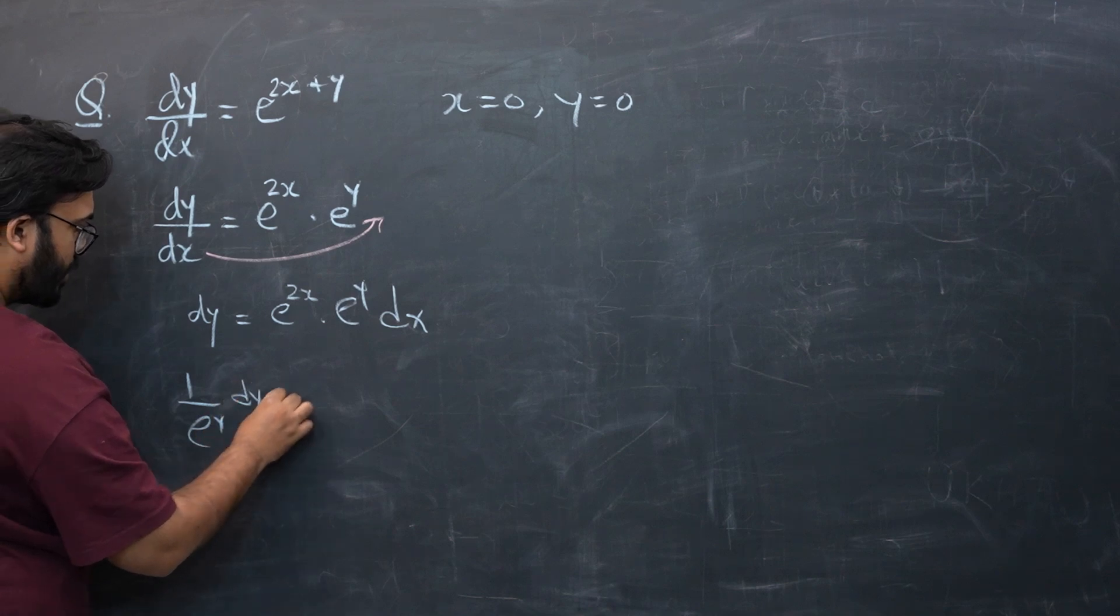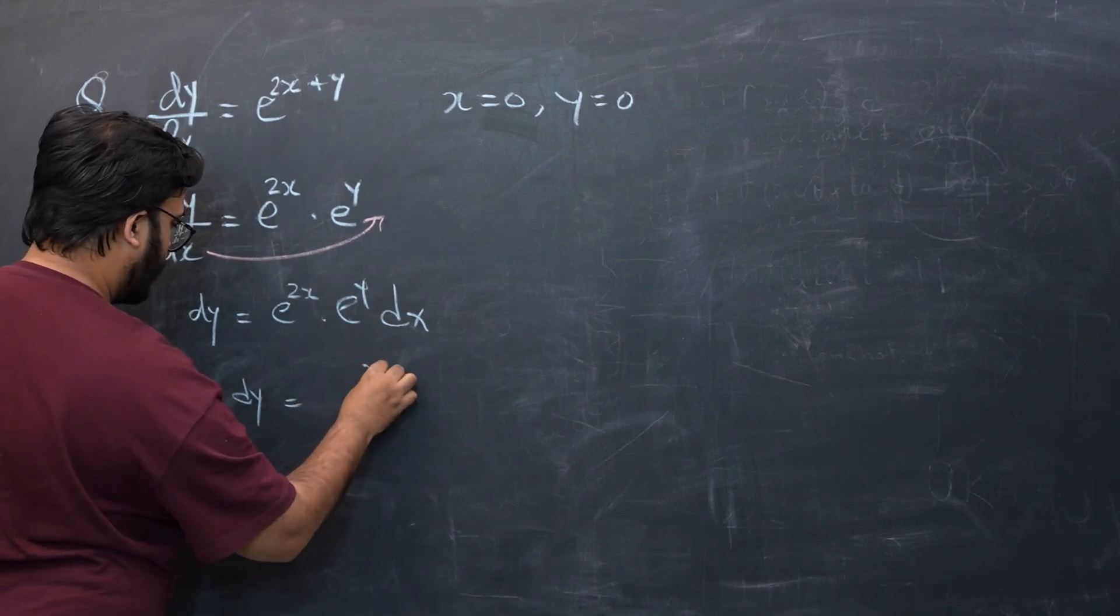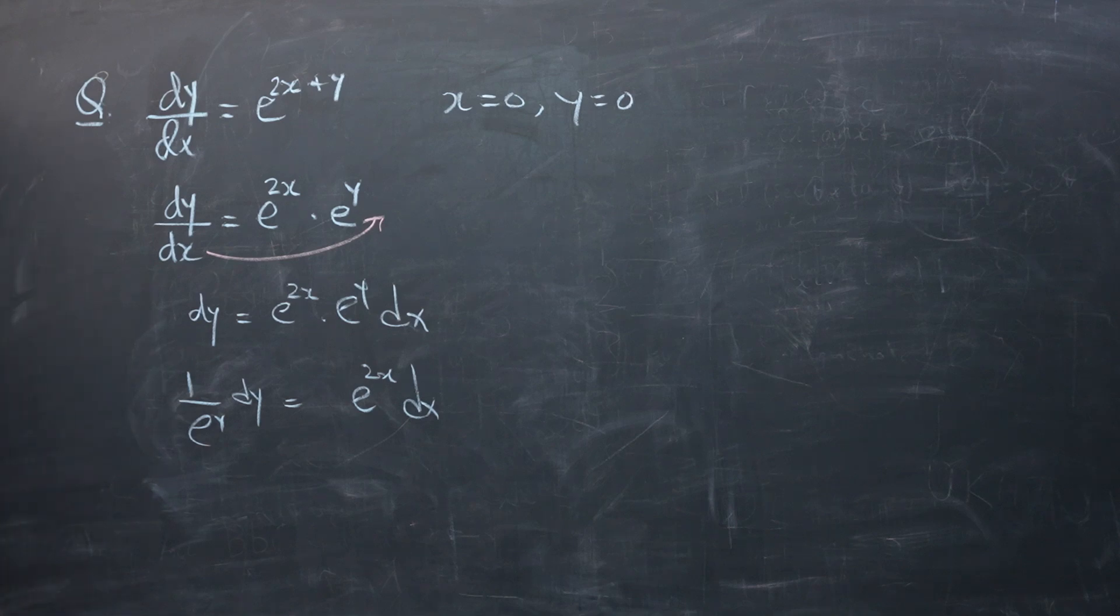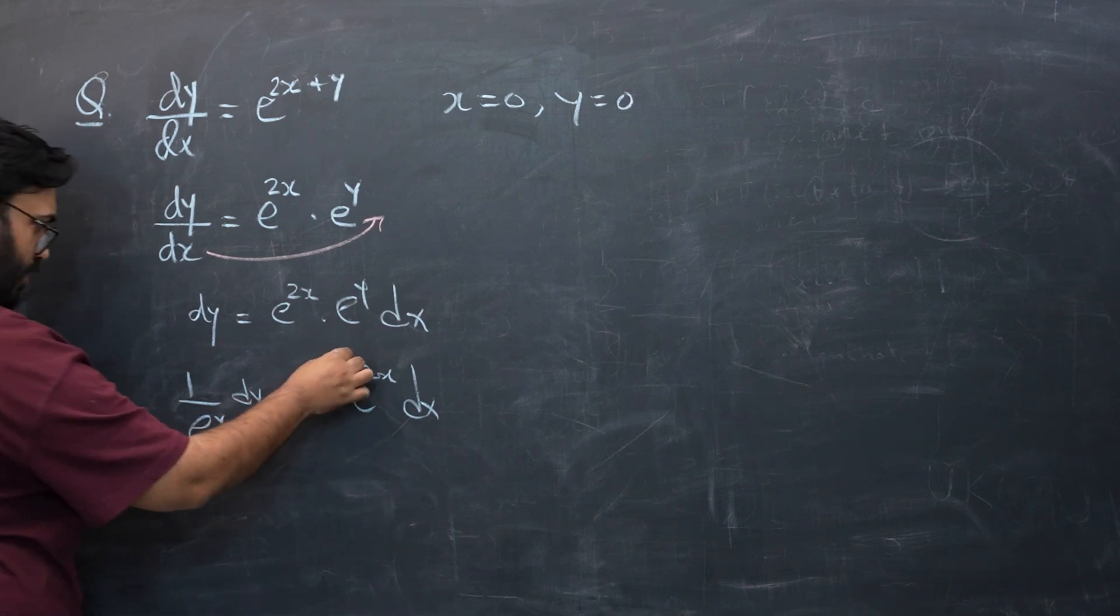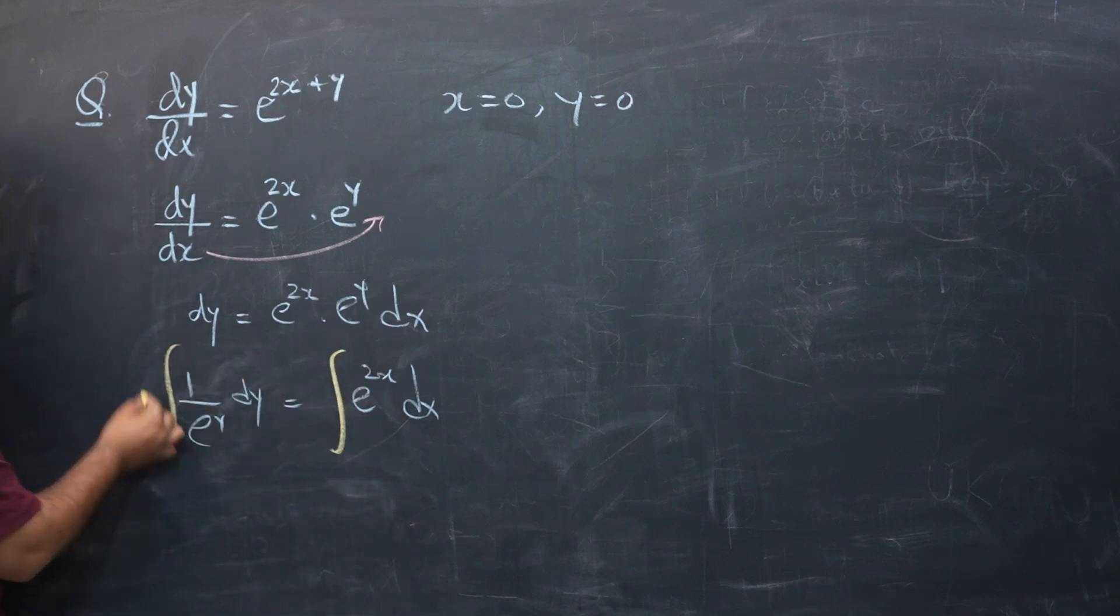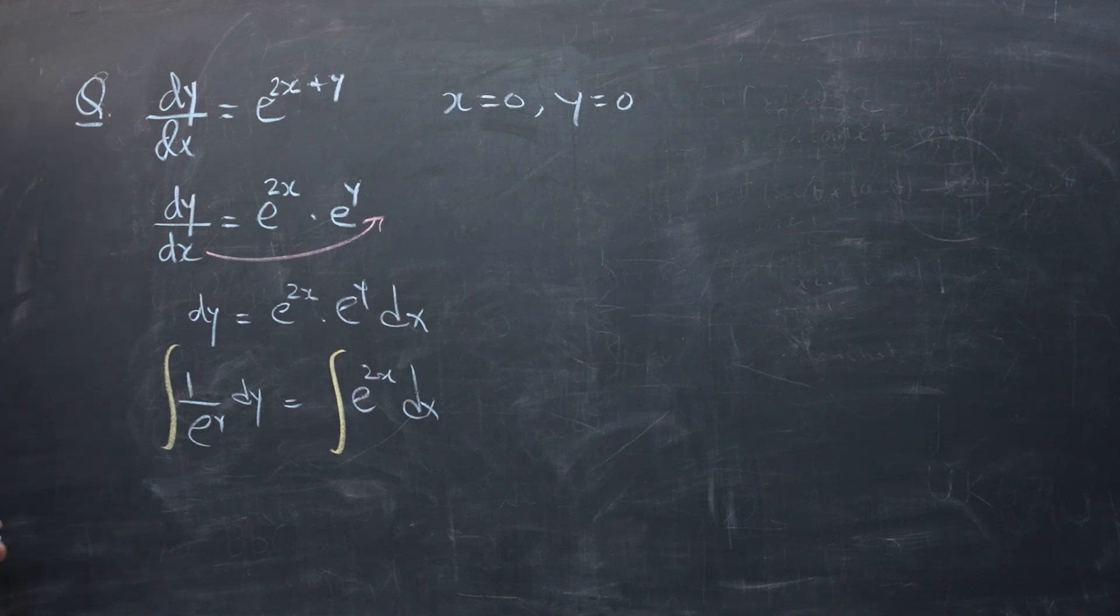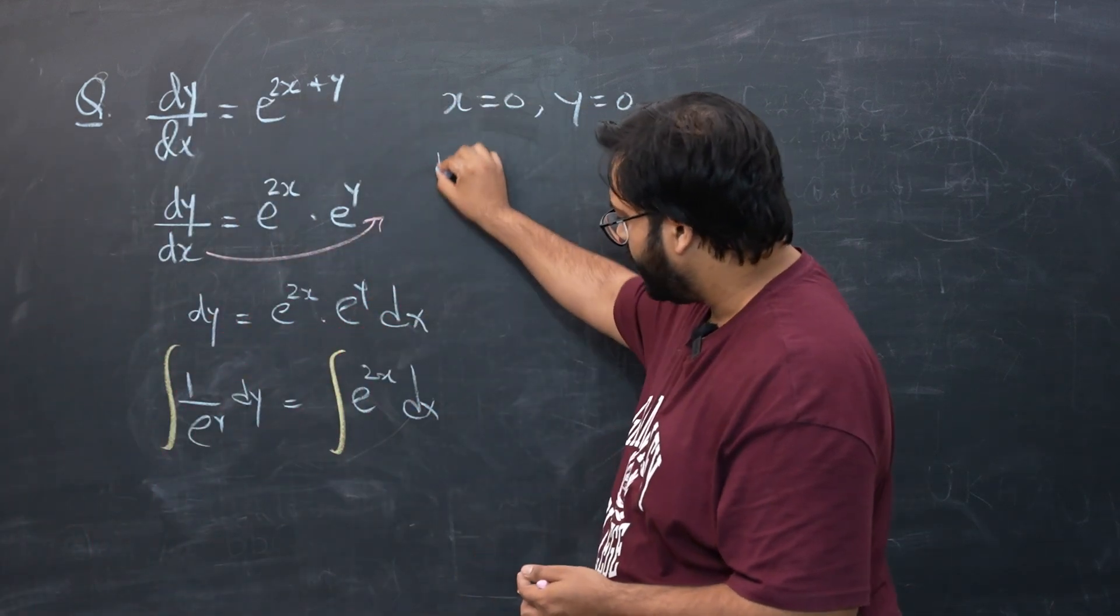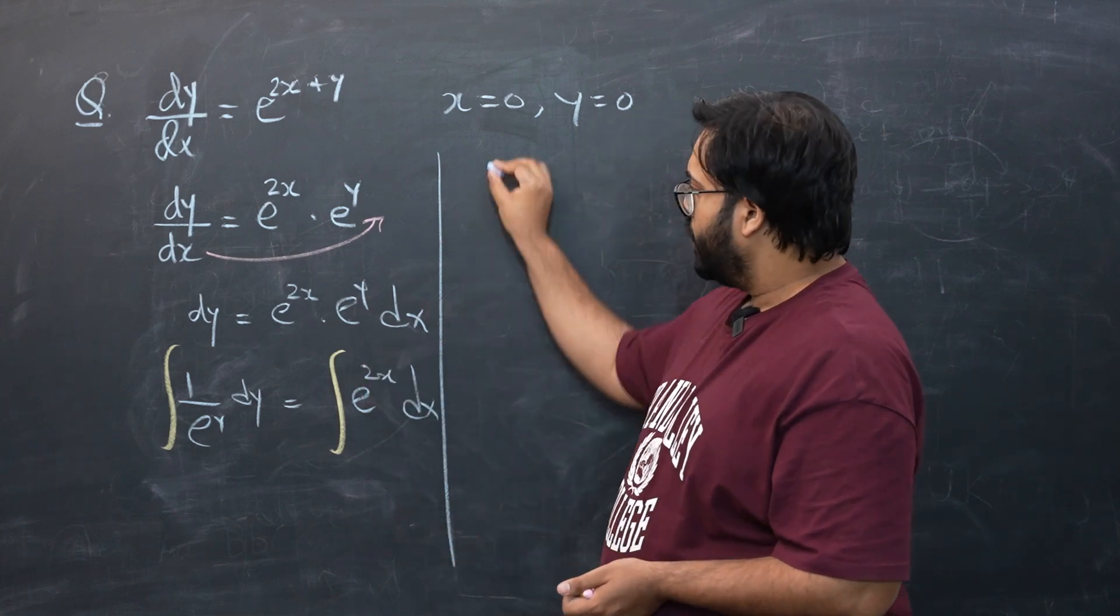dy is equals to e raised to power 2x dx. Now this is where most of our troubles are done and now you can see I have separated the variable. So I'm going to integrate both sides separately. So this was the trickiest part of the question, the rest of it is pretty straightforward.